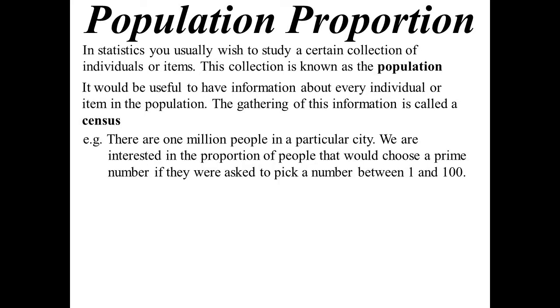Let's say, for example, we're in a particular city which has a million people and we're interested in knowing how many people, if we knocked on the door and said, excuse me, could you please pick a number between one and a hundred? And we want to know how many would come back with a prime number. The theoretical probability is known as the population proportion. Because theoretically, if we got every piece of data we could, then it should equal the theoretical probability.